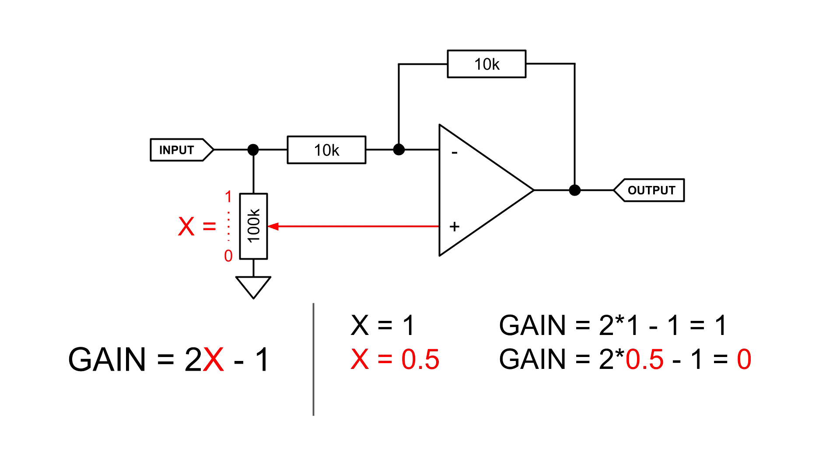If you put the wiper midway to the potentiometer, we have an x of 0.5. This leads to a gain of 0. This means that no signal will pass through, and instead, a DC voltage of about 0 volts will be presented at the output.